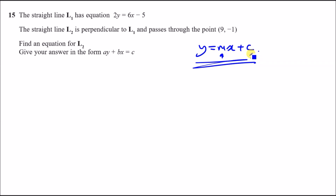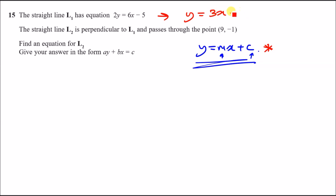So now we begin the question. The straight line l1 has equation 2y = 3x − 5. Straight away, make it look like the standard form — make it y equals — so divide the equation by 2 to get y = (3x − 5)/2. Our gradient in this case is 3/2, so m is the gradient.